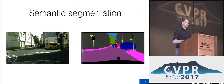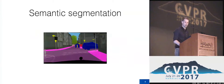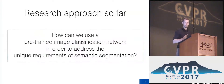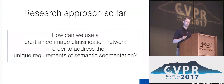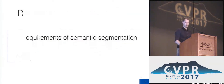This work is about semantic segmentation, which is the task of assigning one class label to each pixel in an image. Looking at previous research in this area, most approaches focus on using a pre-trained image classification network in order to address the unique requirements of semantic segmentation. Before we get into the technical stuff, let's have a look at these unique requirements.